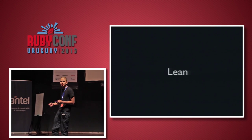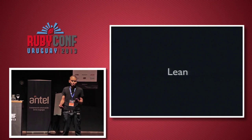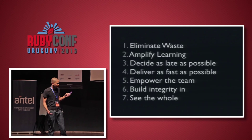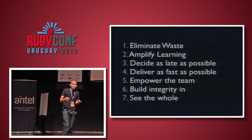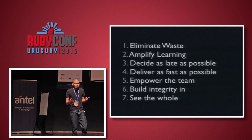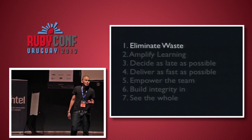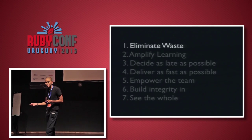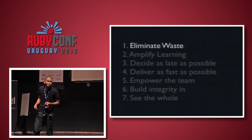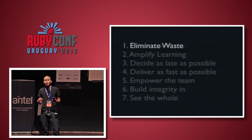Lean can be summarized in seven principles. I'll go through these seven principles briefly. The first is eliminate waste. Waste is simply everything not adding value to the customer.